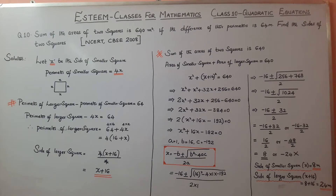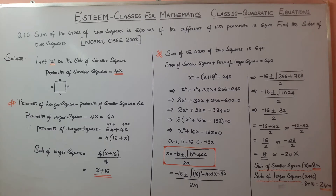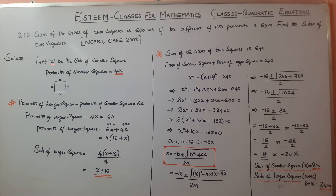Esteemed classes, mathematics class 10, quadratic equations, chapter 10, question: the sum of the areas of two squares is 640 meters squared. If the difference of the perimeters is 64 meters, find the sides of the two squares. We will start with the solution.